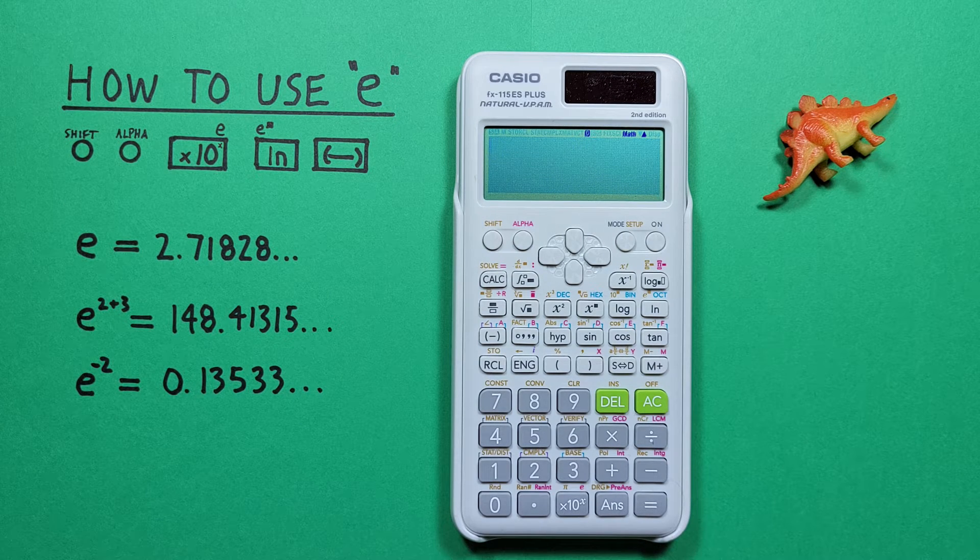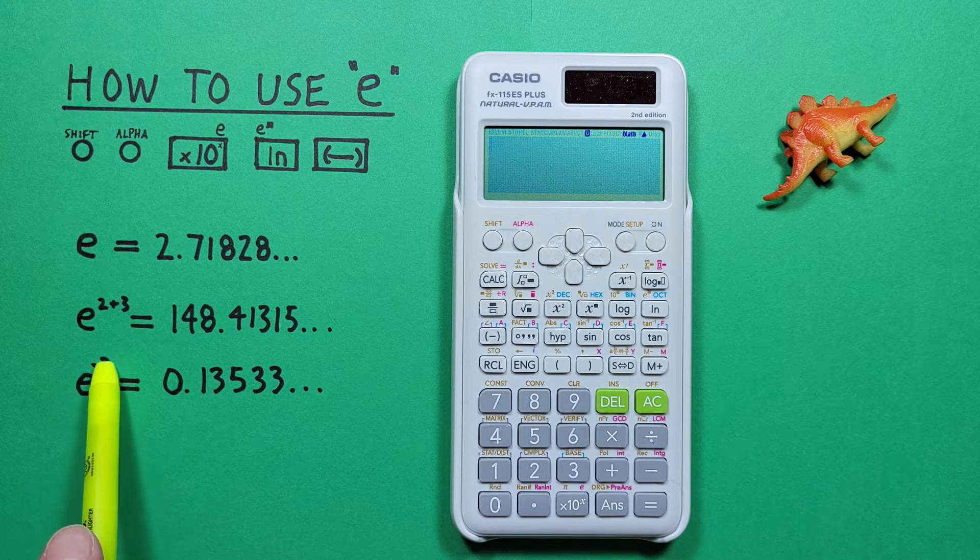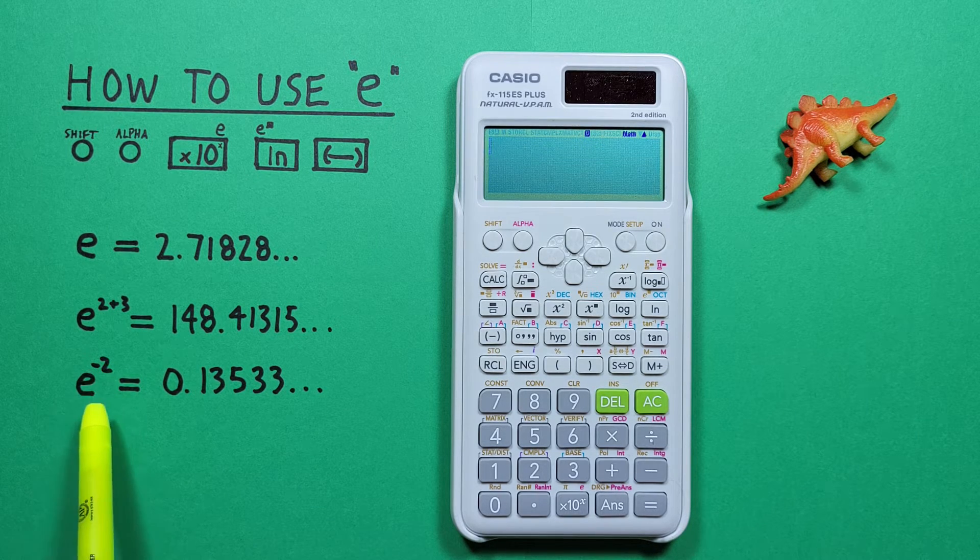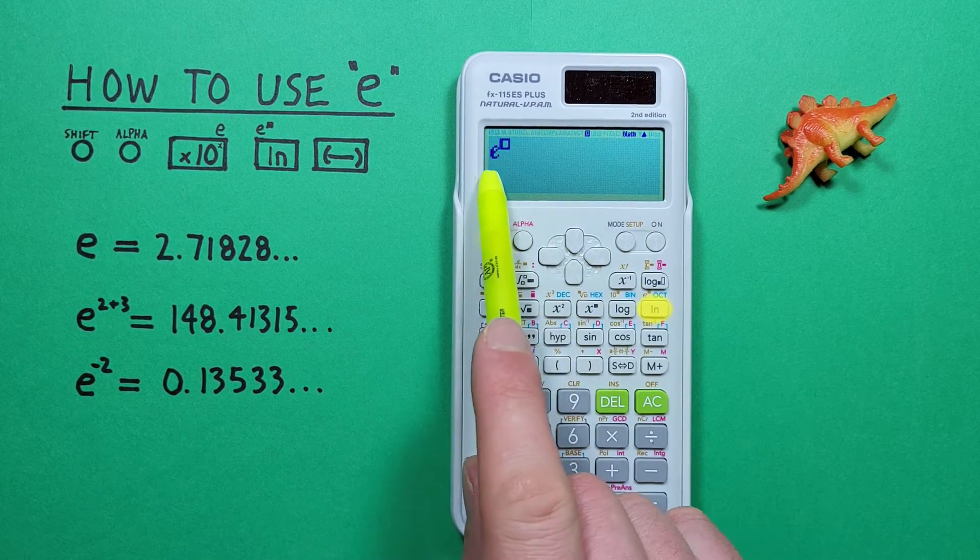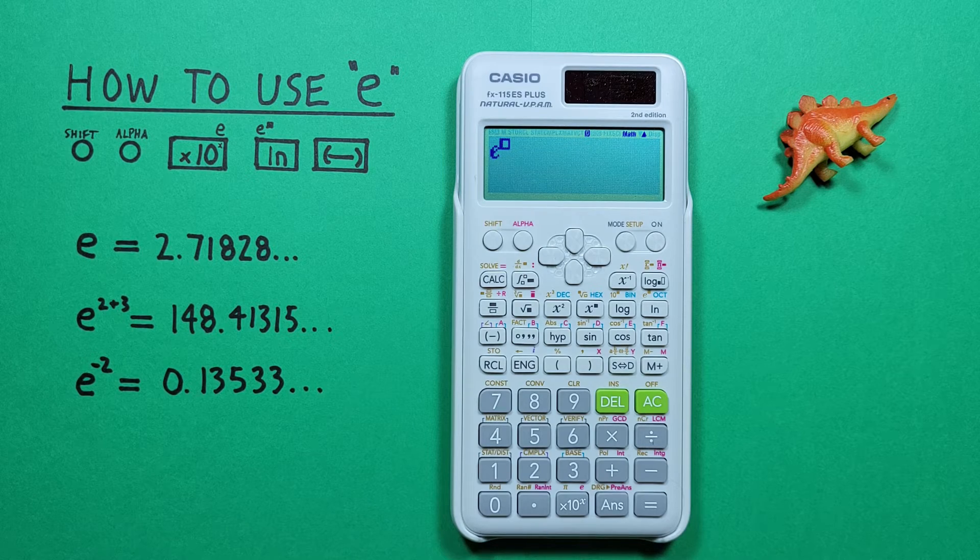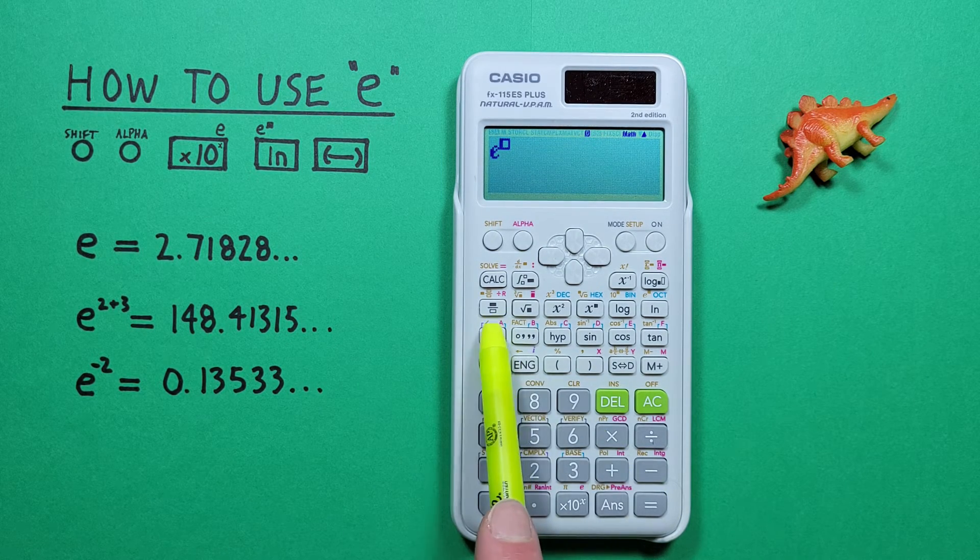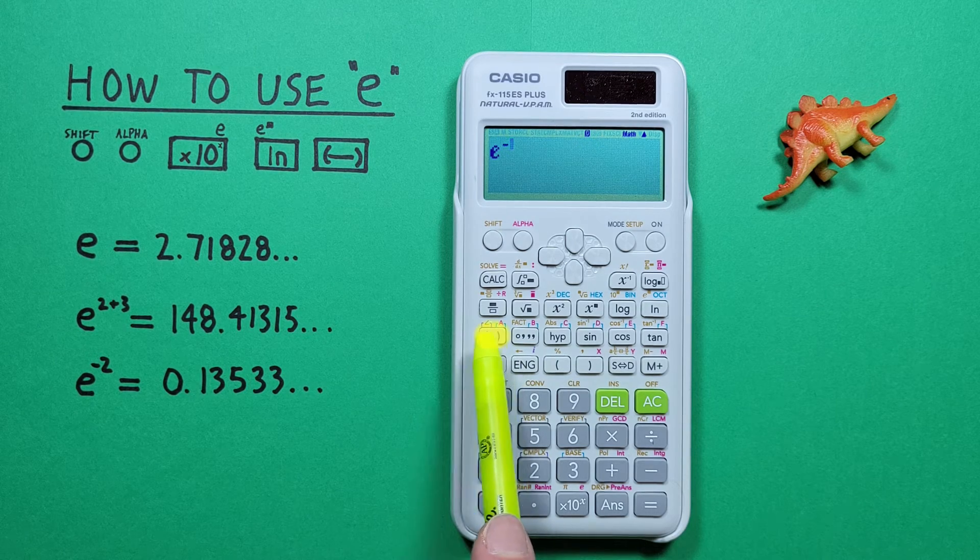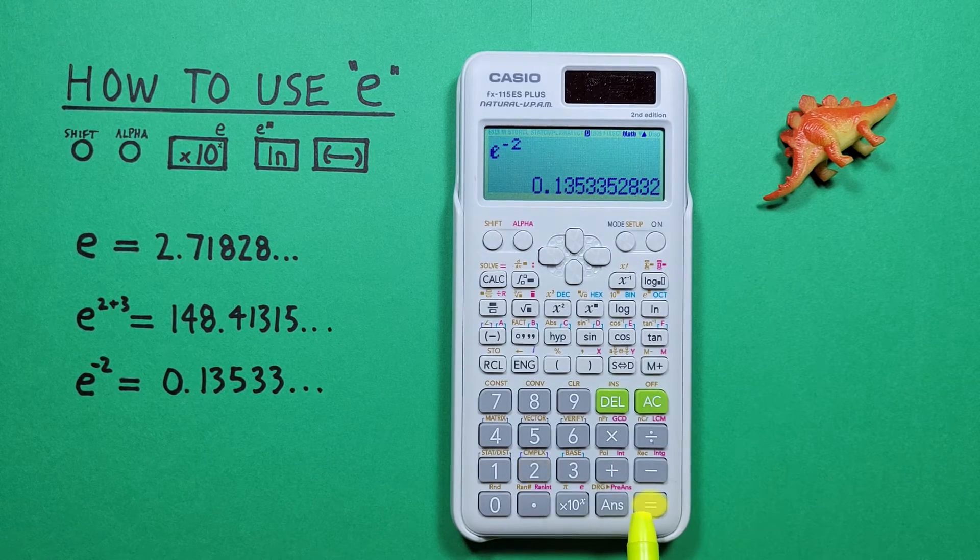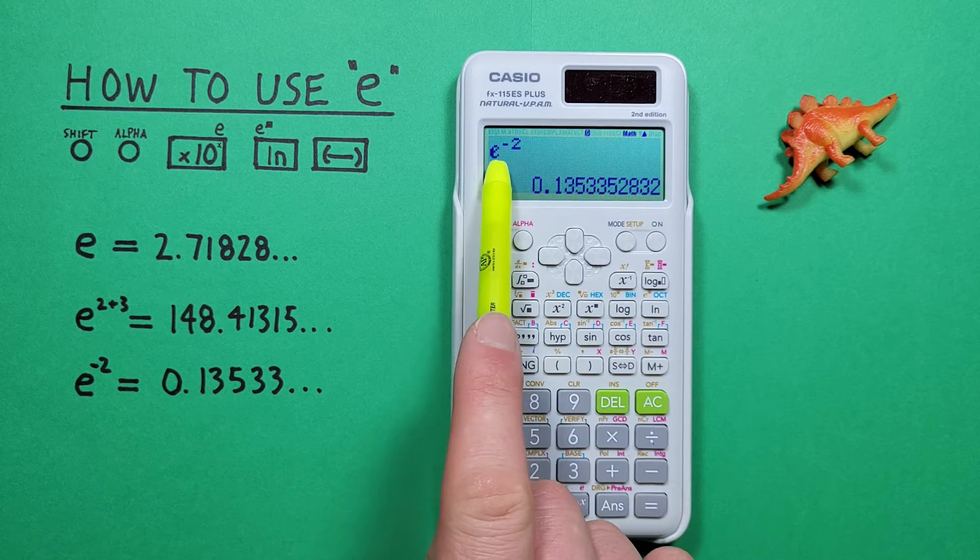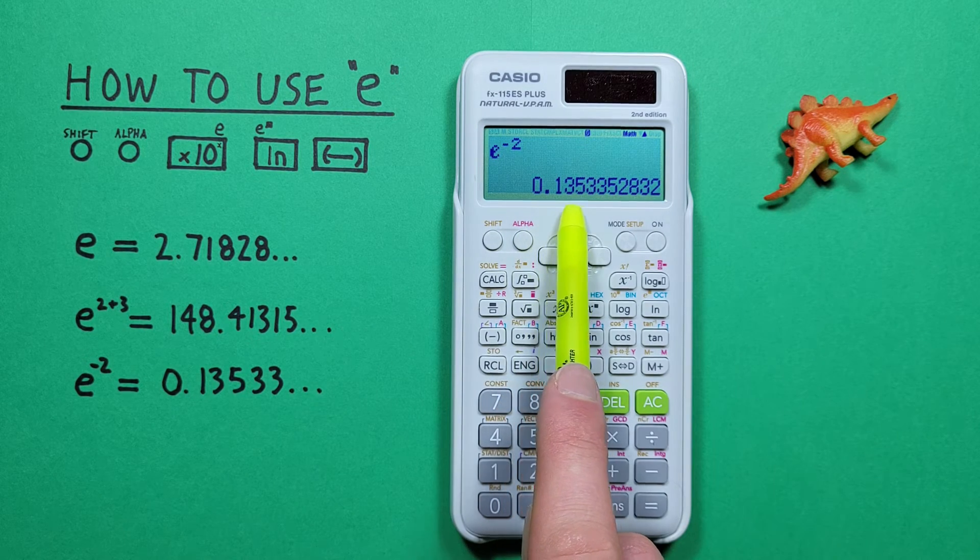If we want to get negative exponents, we need to use the negative key. So if we have e to the power of negative 2, we start the same way with shift ln. There we have e with the exponent box, and then we use the negative sign, not the subtraction sign, and then our 2. Press equals, and we see we get e to the power of negative 2 is equal to 0.13533, etc.